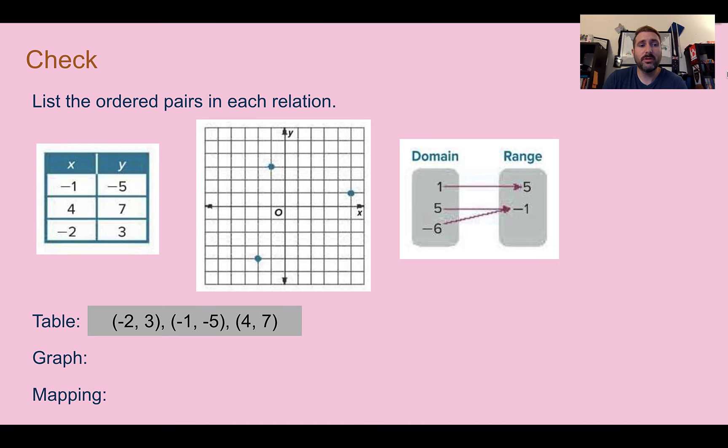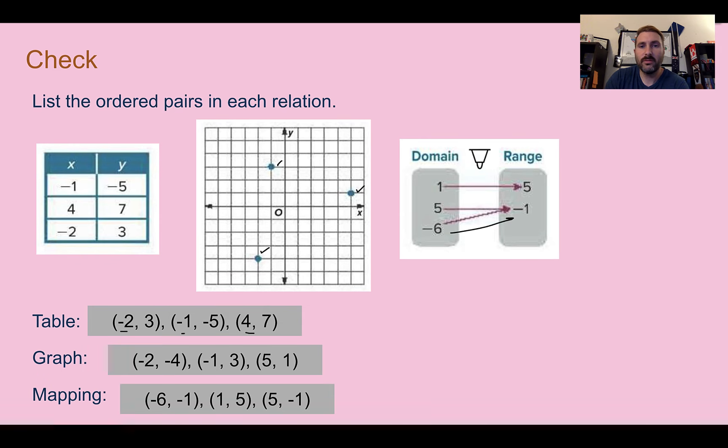Check your answer. For the table, we had (-2, 3), (-1, -5), and (4, 7). These are just put in order from the lowest x value to the greatest x value. For the graph, we have (-2, -4), (-1, 3), and (5, 1). For our mapping, we have (-6, -1), (1, 5), and (5, -1). So writing it as a relation, we list out the ordered pairs.